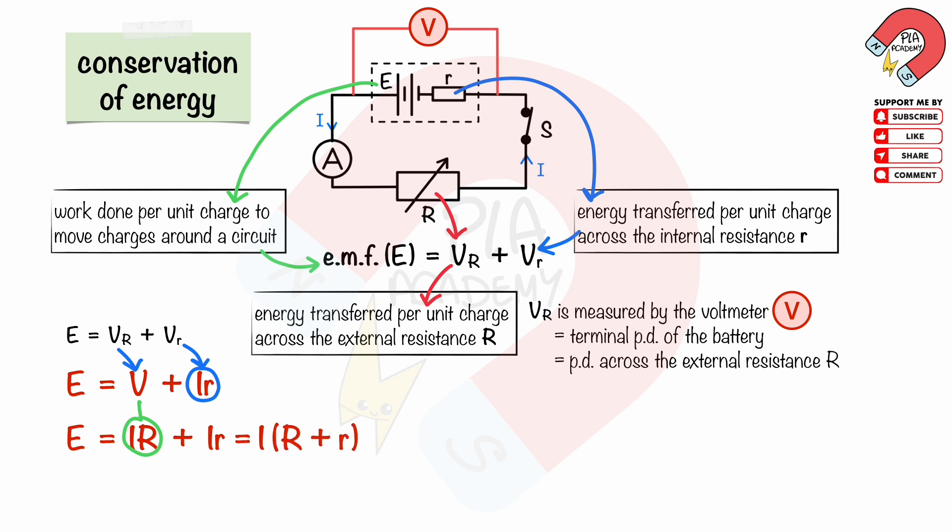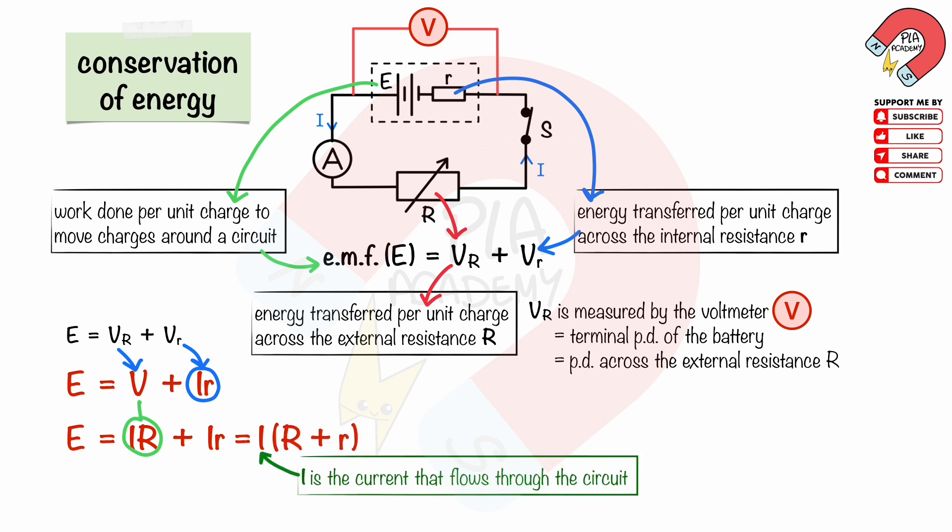And V equals I times the external resistance R. We then factor out I, where I is the current that flows through the circuit.